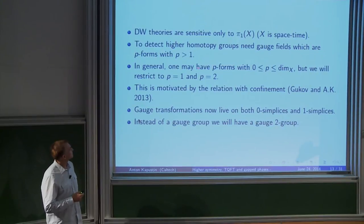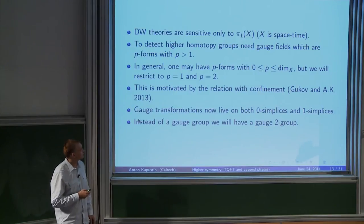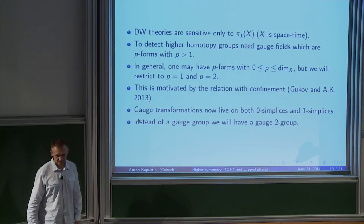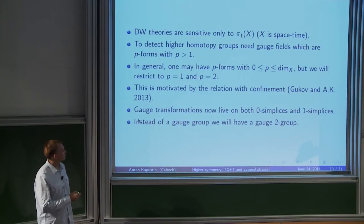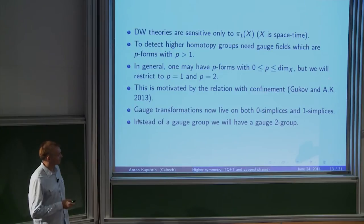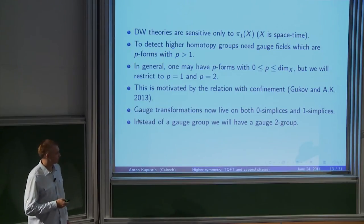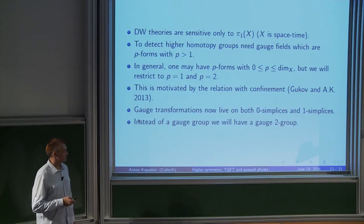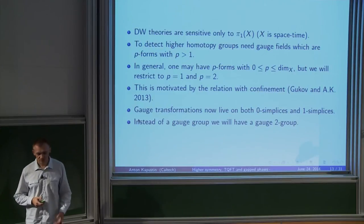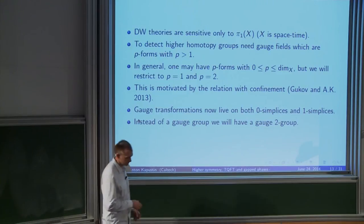What I'm going to do is try to generalize this construction. Dijkgraaf-Witten theories only care about G-bundles, so they detect only π₁ of X. If you want to detect some higher homotopy groups, you need gauge fields which are p-forms with p greater than one. I'll focus on the case with p=1 and p=2. The usual gauge fields correspond to p=1, and these are two-form gauge fields. This was motivated by the relation with confinement, explained in detail in the paper with Sergey.